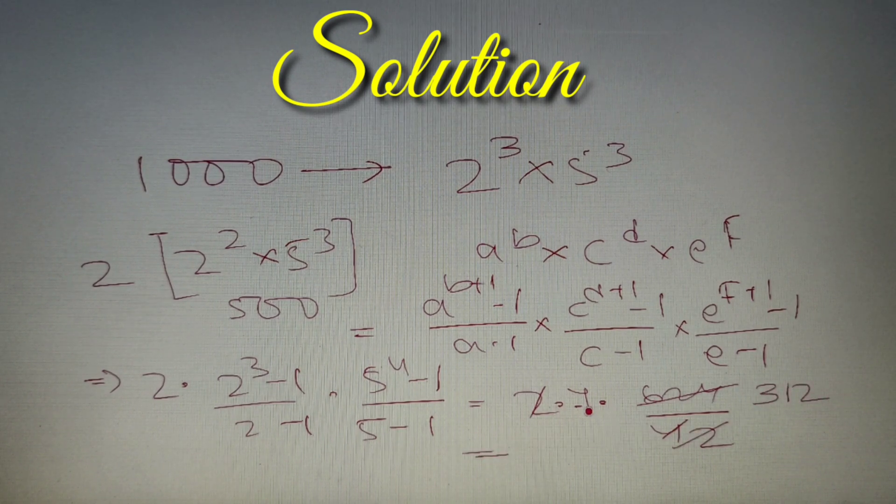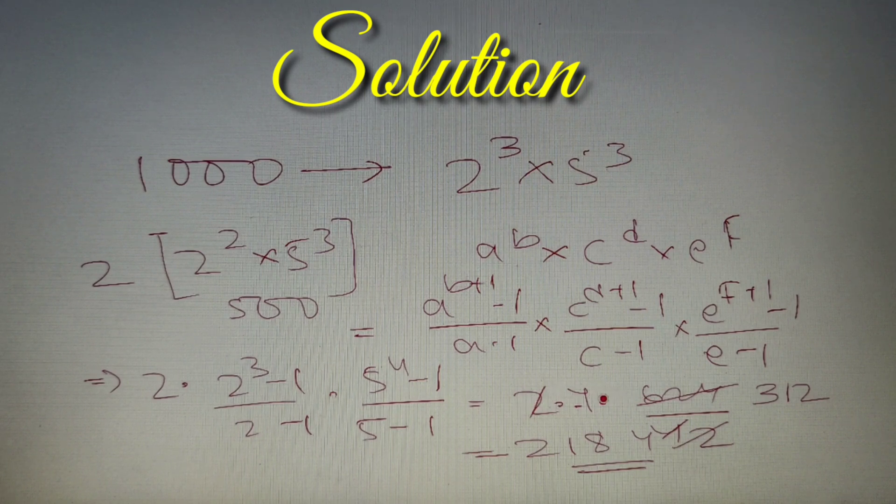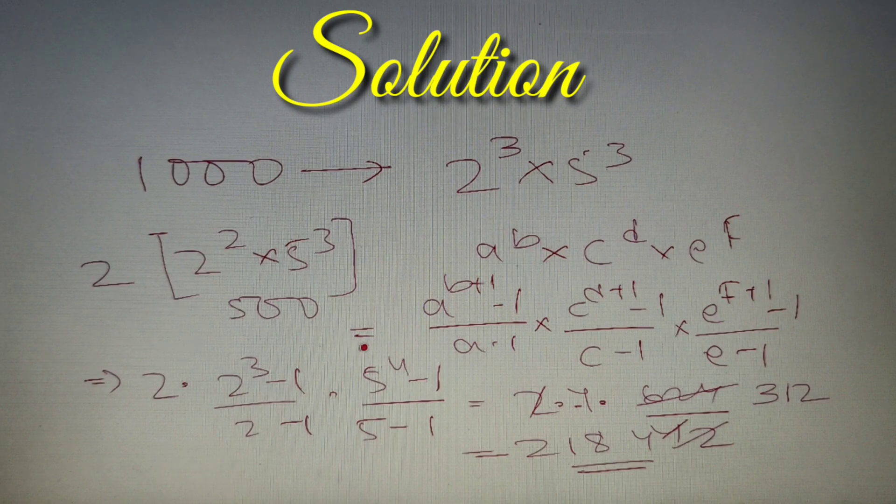So final answer is equal to 7 into 312, that is basically 2184, and according to the given options it is option number B. So final answer to our question is option number B, 2184, that implies the sum of even positive divisors of the number 1000 is equal to 2184.